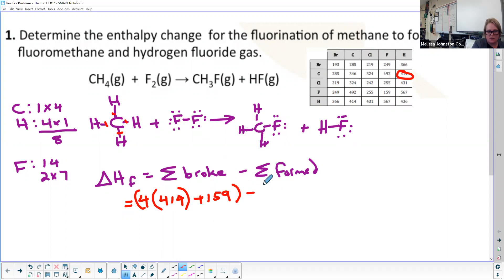Minus, and I formed one, two, three C-H bonds—minus, and that's going to be the 414 again—plus one C-F bond, and C-F is going to be 492, plus I've got one H-F bond, and H-F is going to be 567.